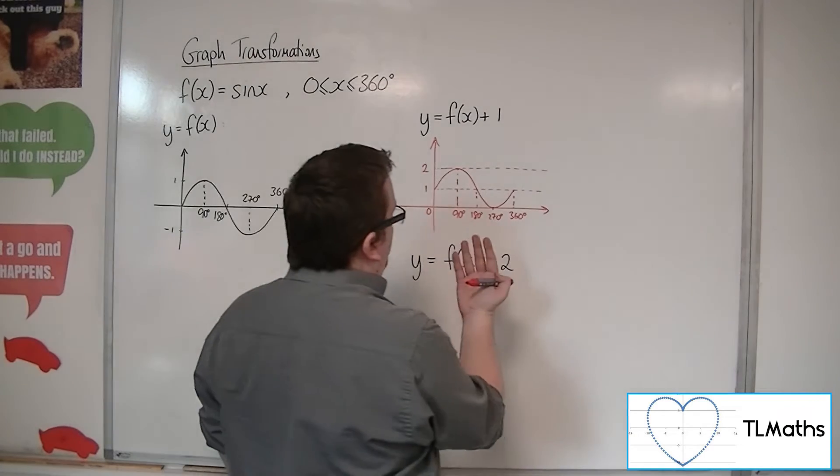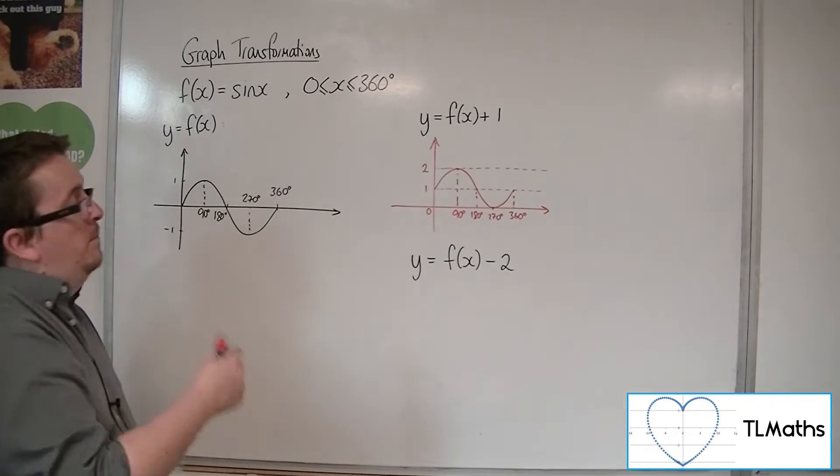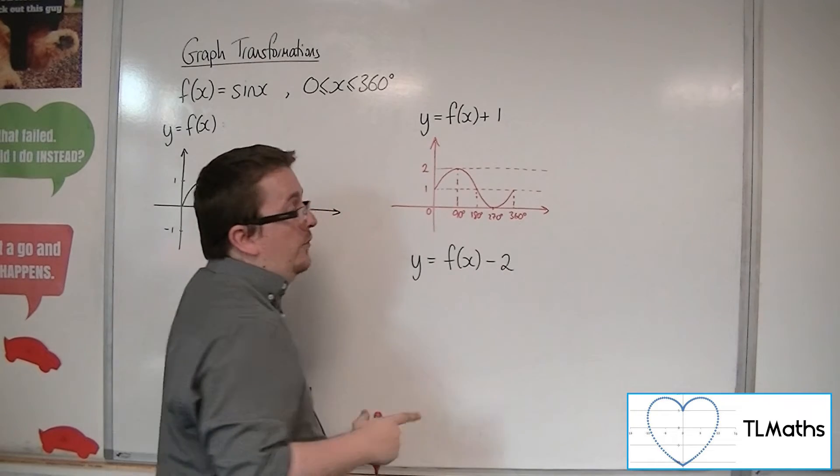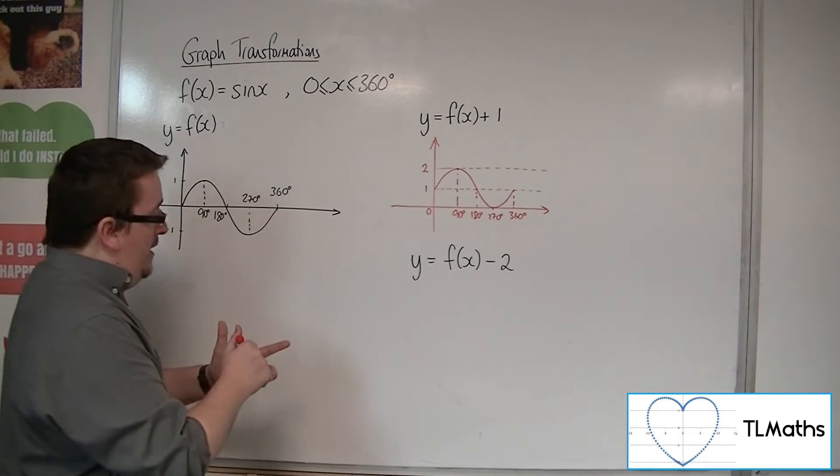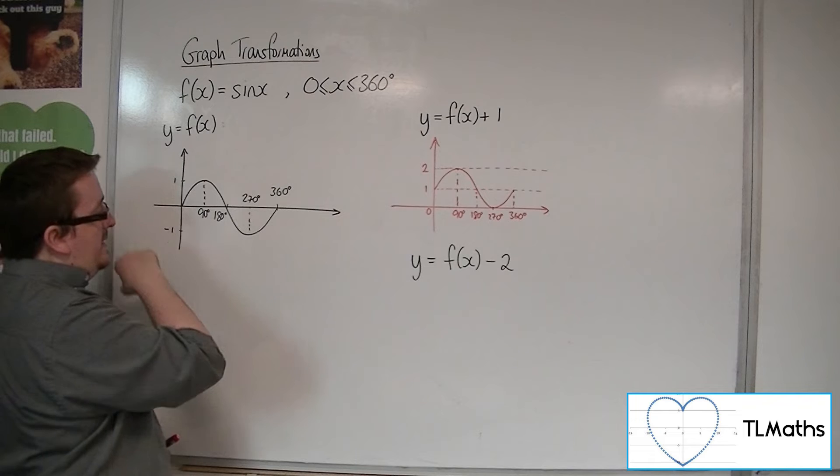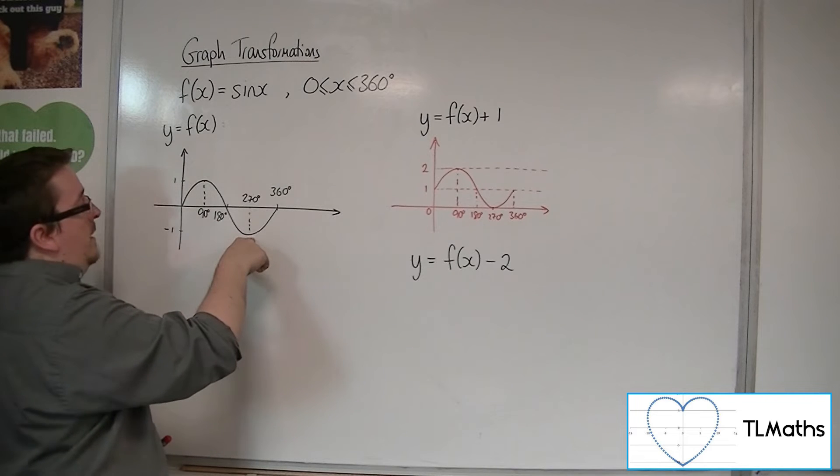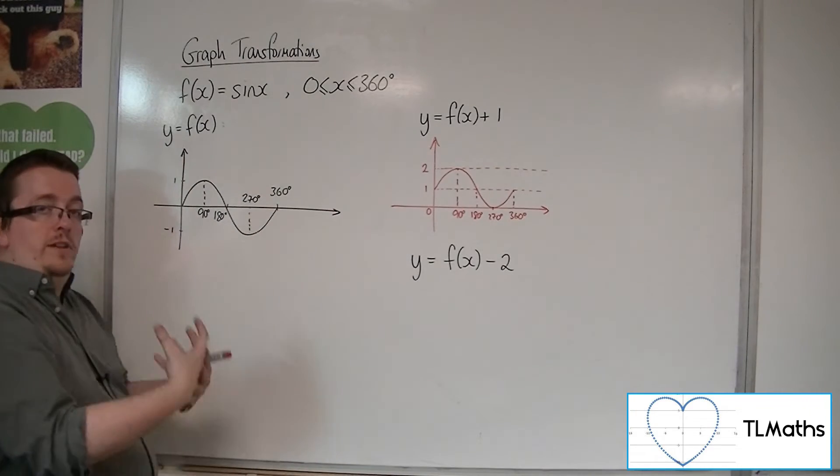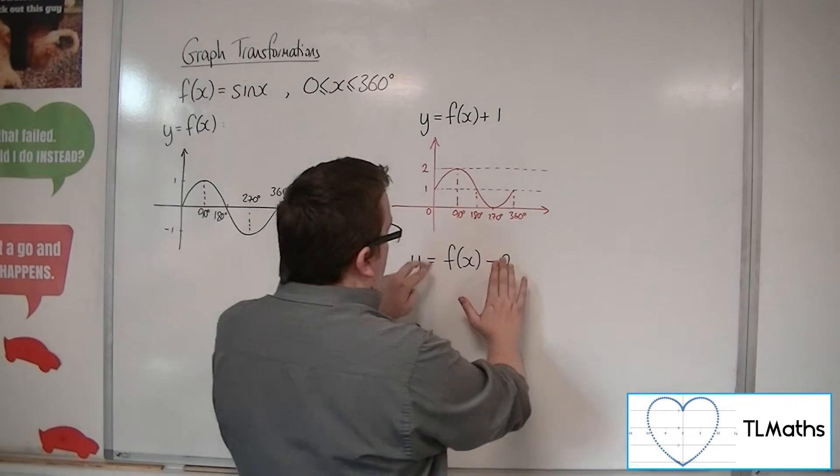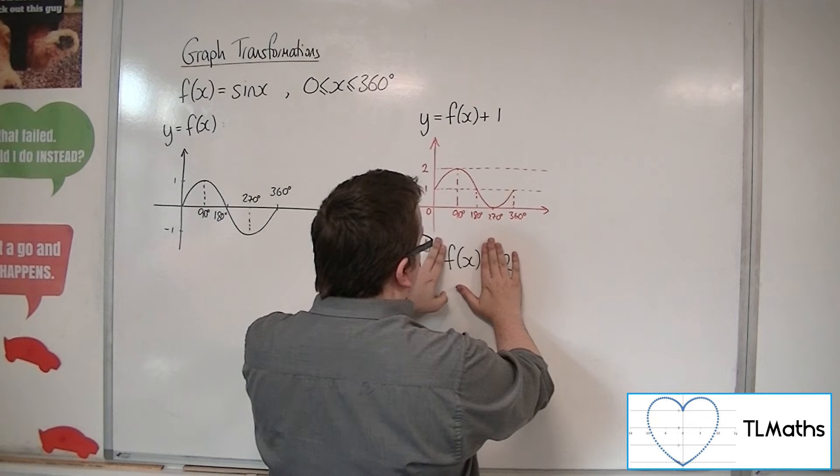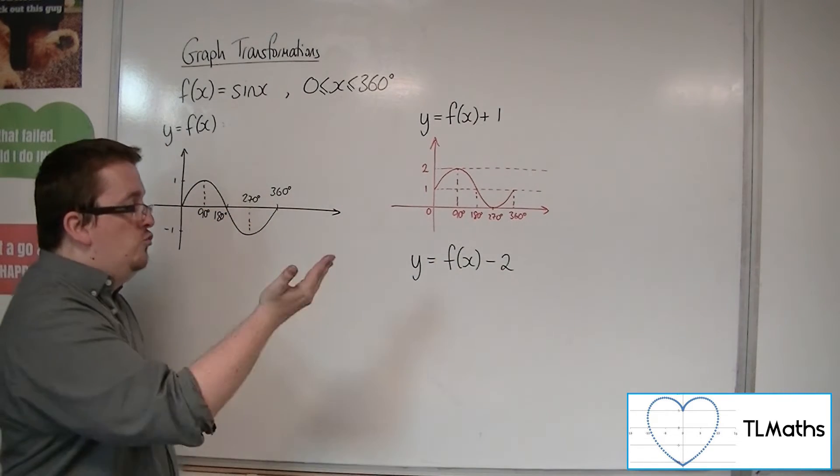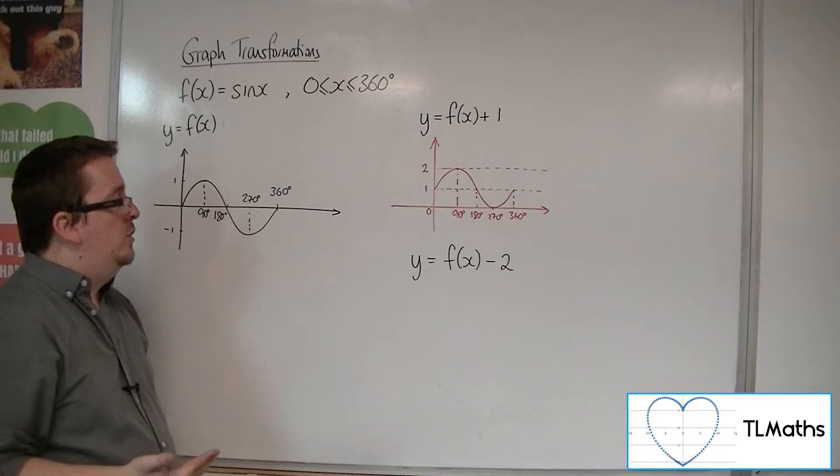So if I do the same for this one, then my initial guess would be that it's going to drop it down 2 units. So if I look at the point, let's say this point here, at 270 minus 1, when x is 270 degrees, f of x is minus 1. So I put in x is 270 to that, I get minus 1, take away 2 is minus 3. So it drops the y-coordinate down 2 positions.